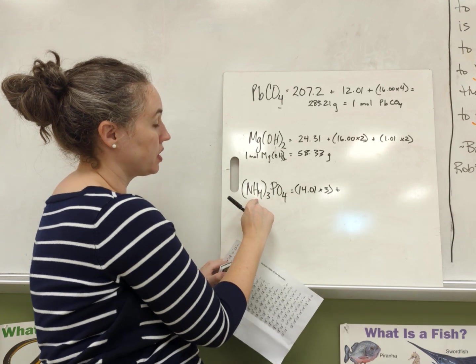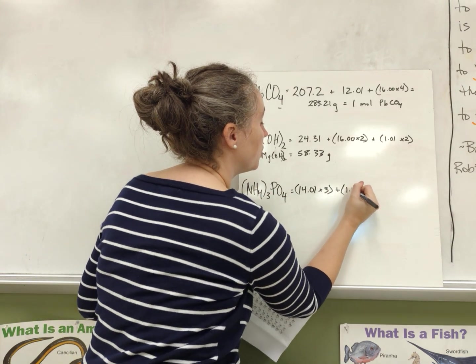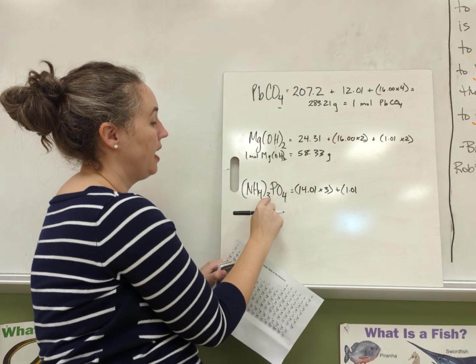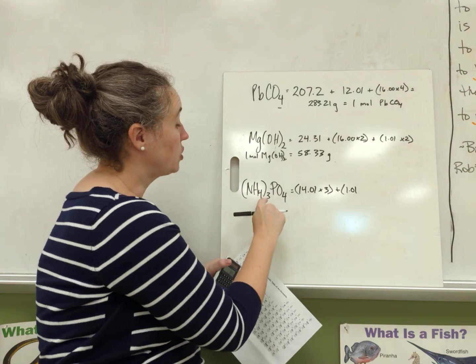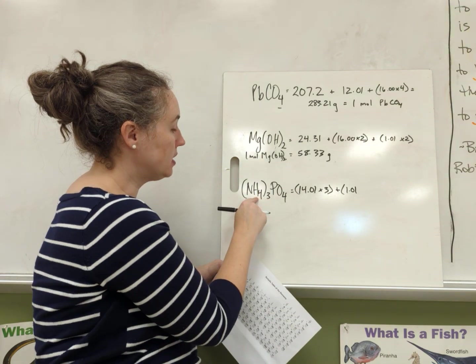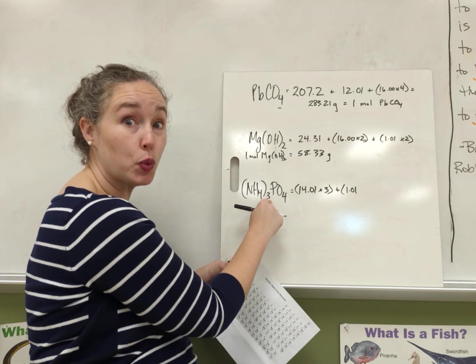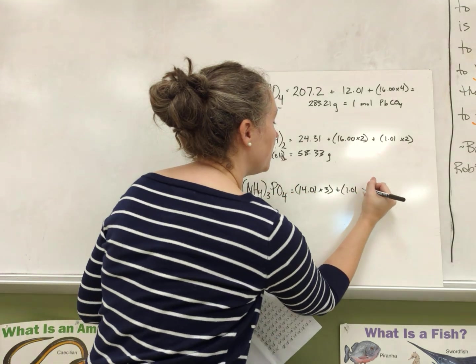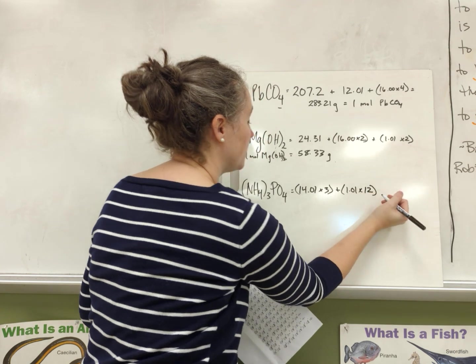And then what about hydrogen? Hydrogen we know from before is 1.01, but how many? So we're going to multiply. There's 4 inside, so we do 4 times 3. So that's going to be, we're going to multiply this by 12. 4 times 3 is 12.